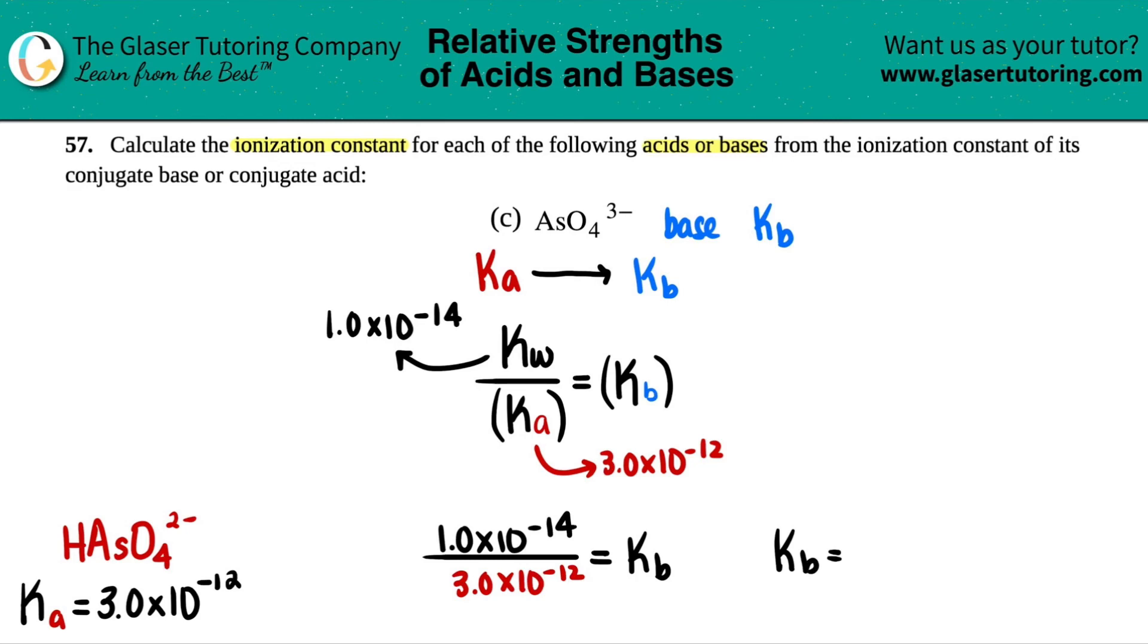Calc is out. 1 times 10 to the negative 14th divided by 3 times 10 to the negative 12th. And I guess we'll put it in scientific notation. Or actually, we don't have to. 0.0033 for two sig figs, and call it a day. This would be the same as 3.3 times 10 to the negative 3rd. So 3 is all around, but I'll keep it like this. And there's your Kb.